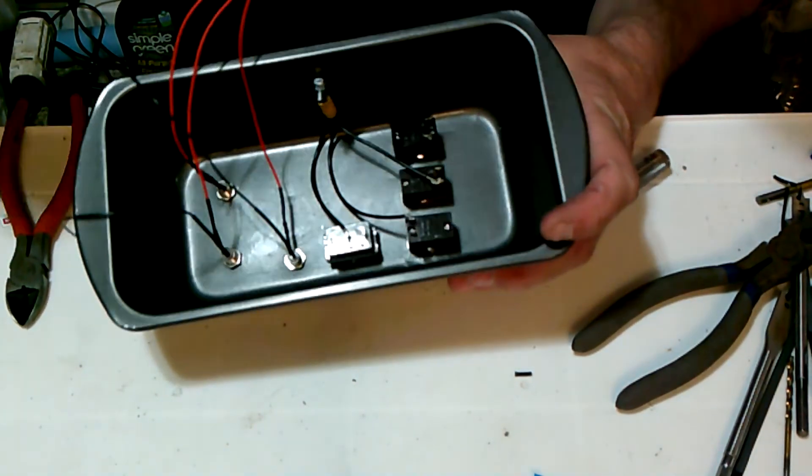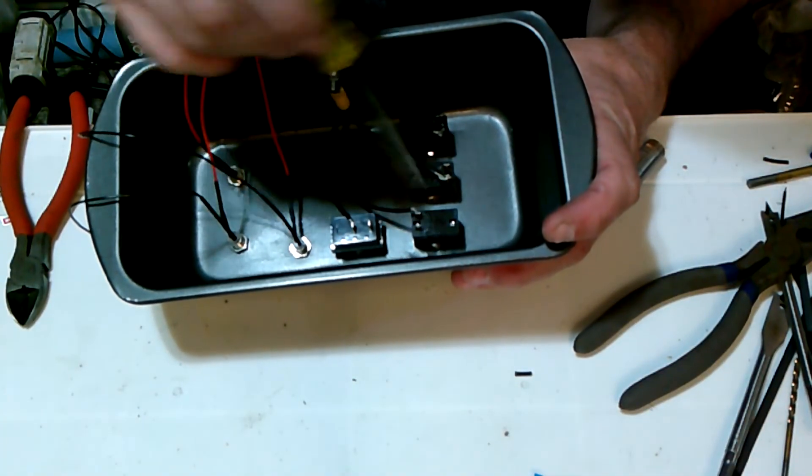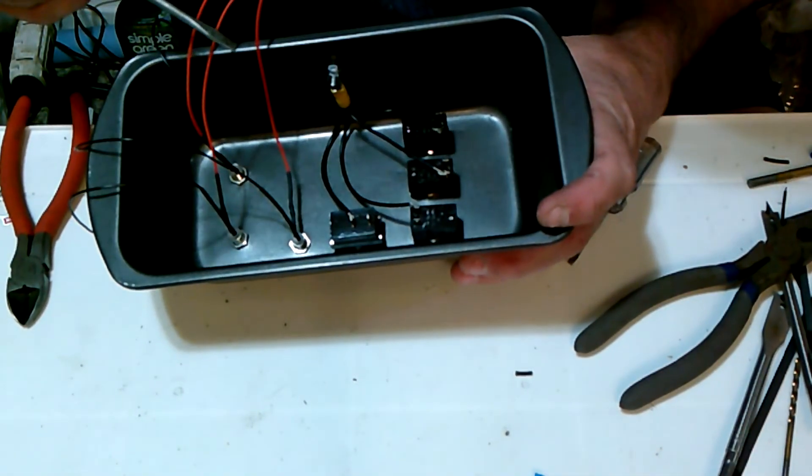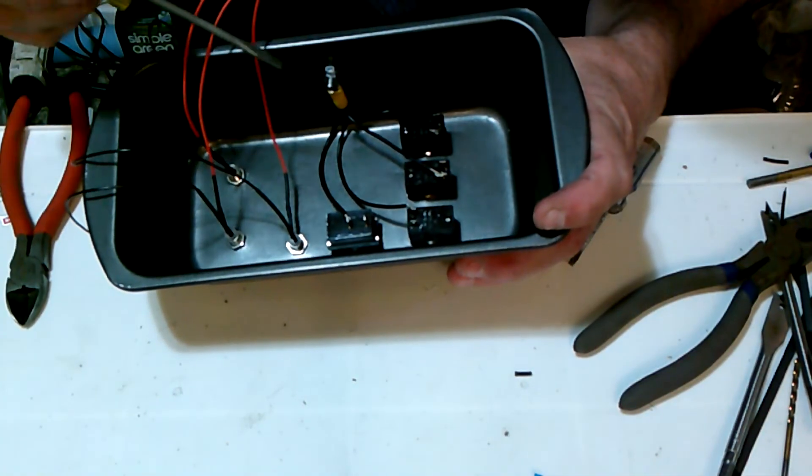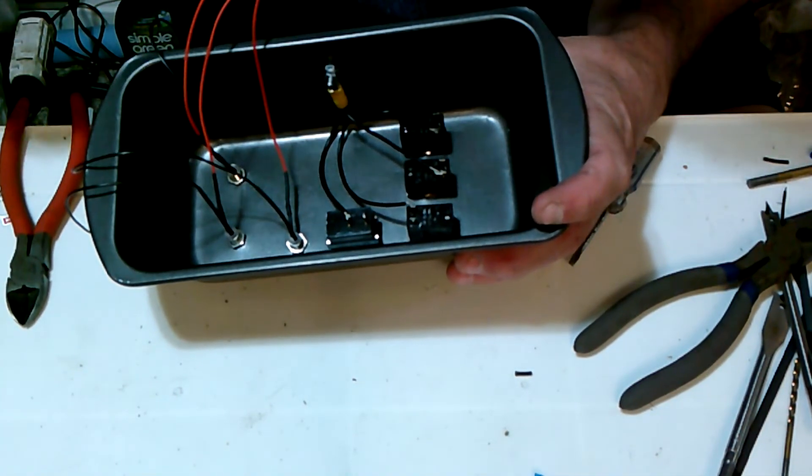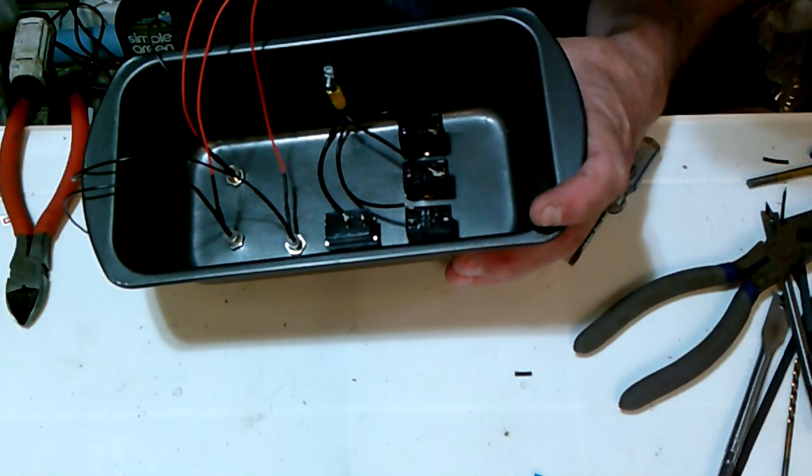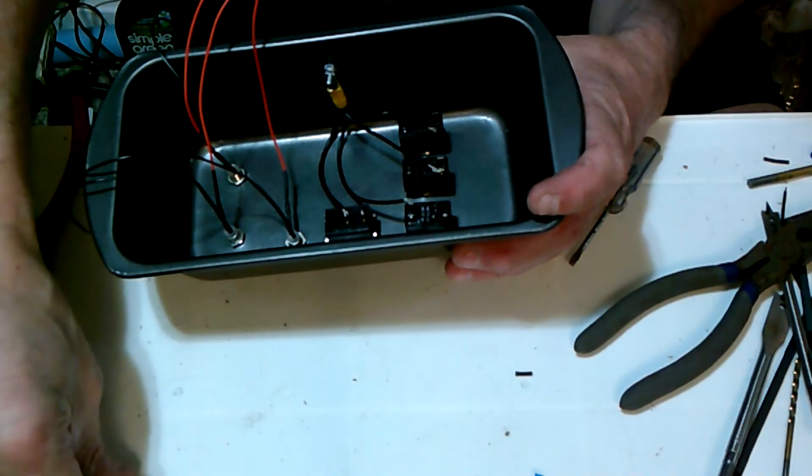Get your grounds hooked up. You can daisy chain them to each other, one to the next to the next and then the ground. I just ran individual wires all to ground because there's not much distance in here and it's pretty simple to do. Just as long as you get everything eventually to a ground.